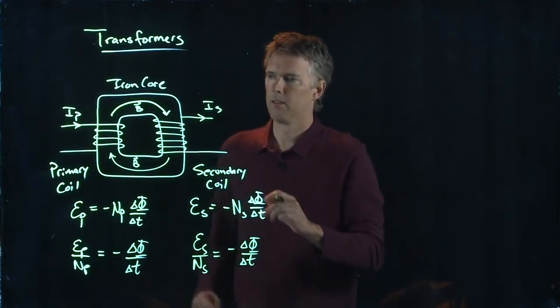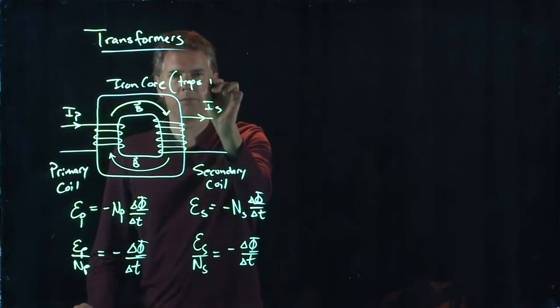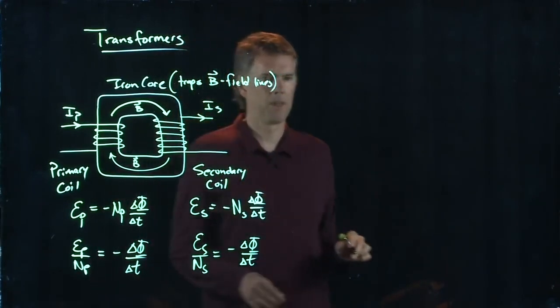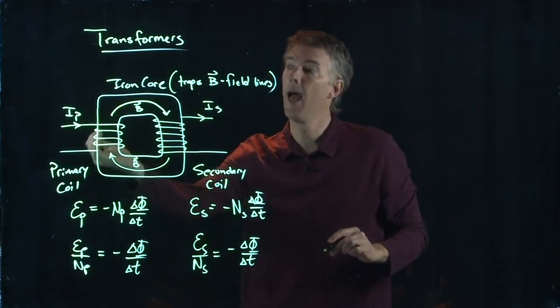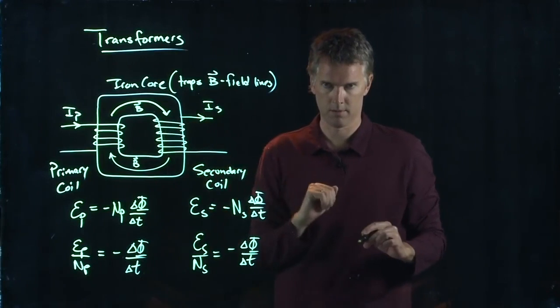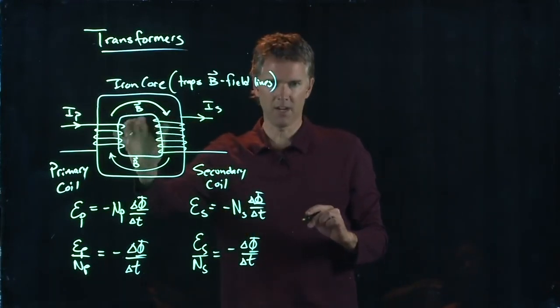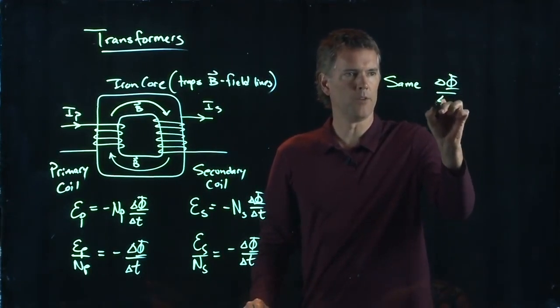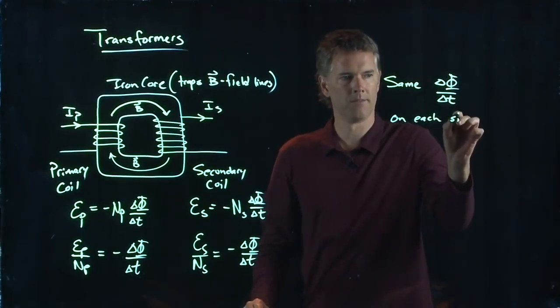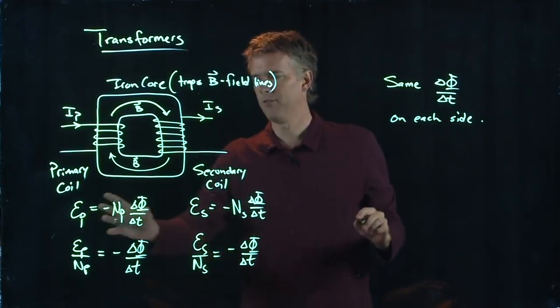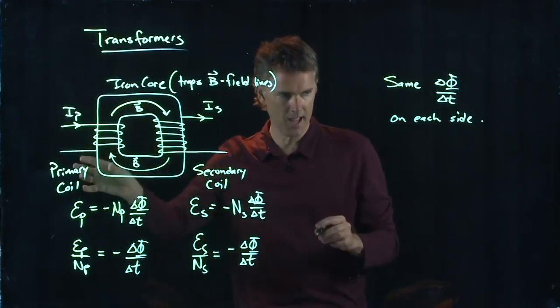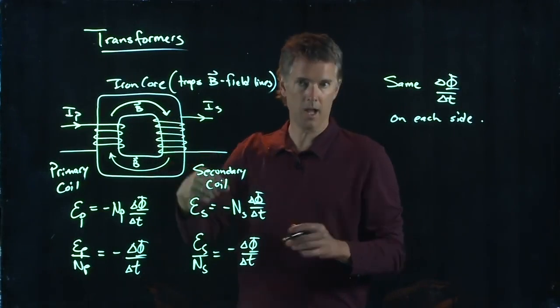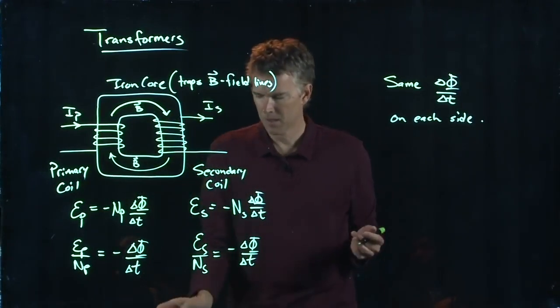And now here's the thing. The iron core traps the B-field lines. So the B-fields that are coming through this one end up going through the other one. And so on either side, you in fact have the same delta phi over delta T on each side. Delta phi over delta T on the left side is exactly the same as delta phi over delta T on the right side. Because all those B-field lines go through and they do it in the same amount of time delta T.